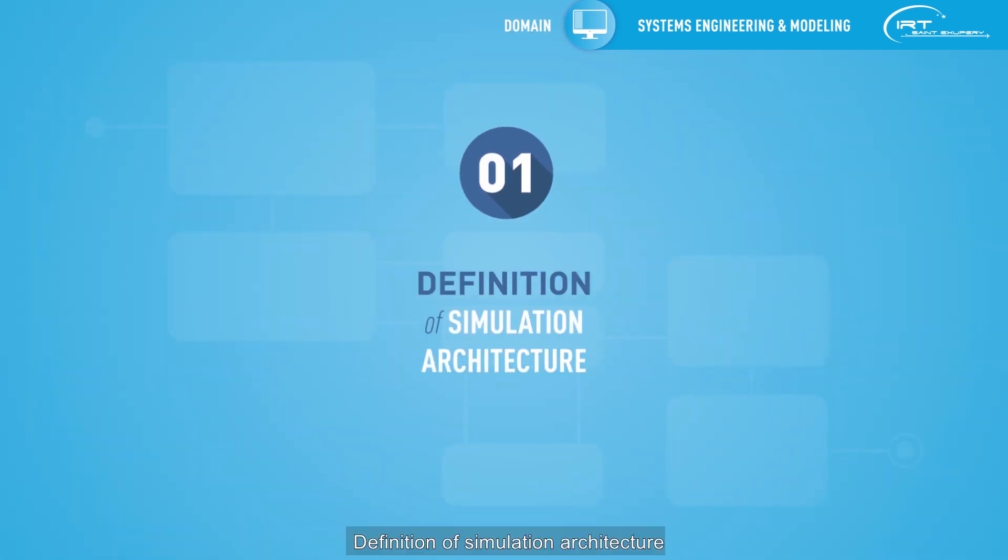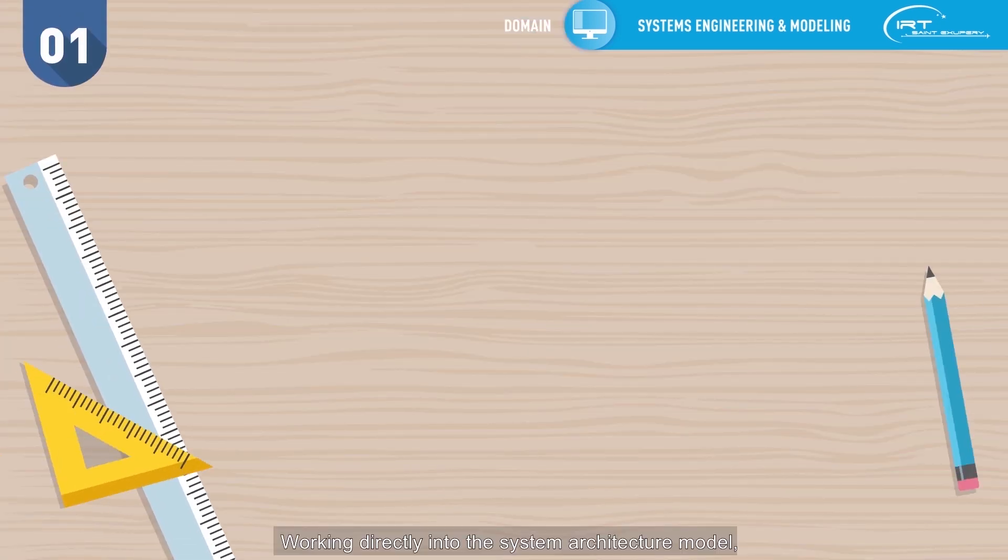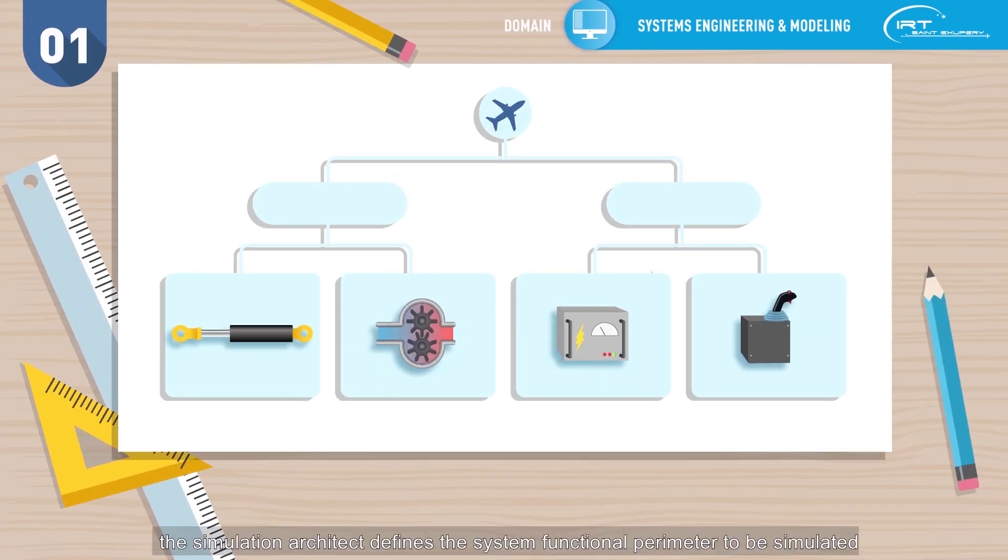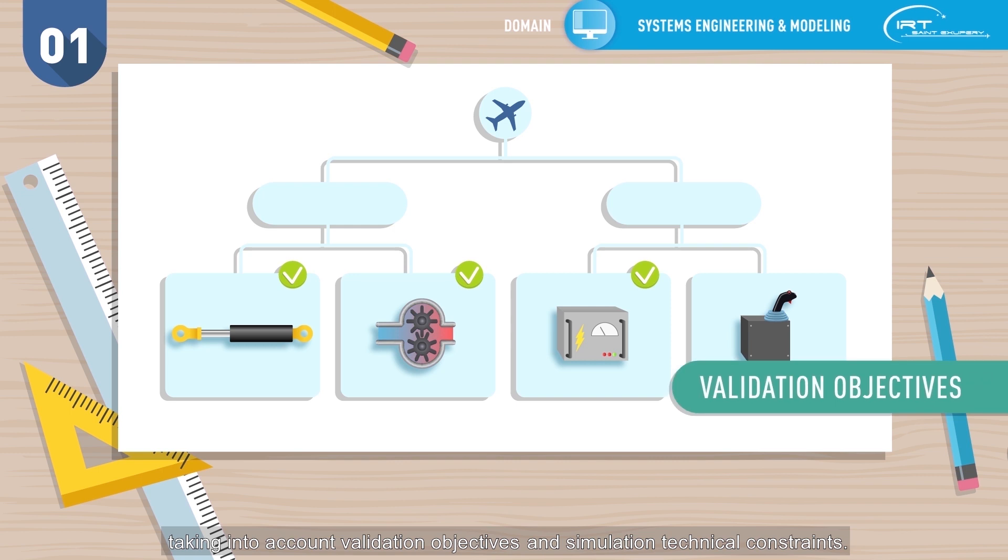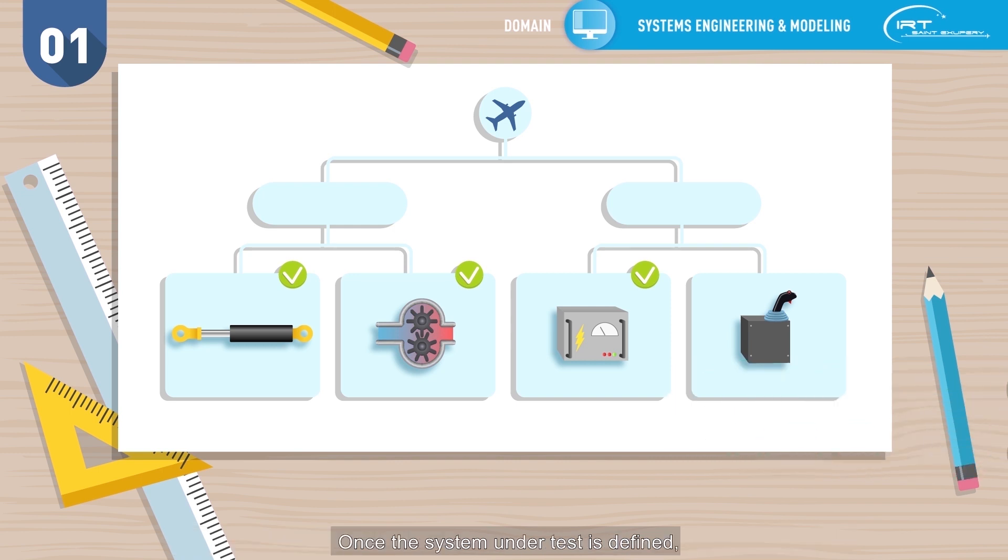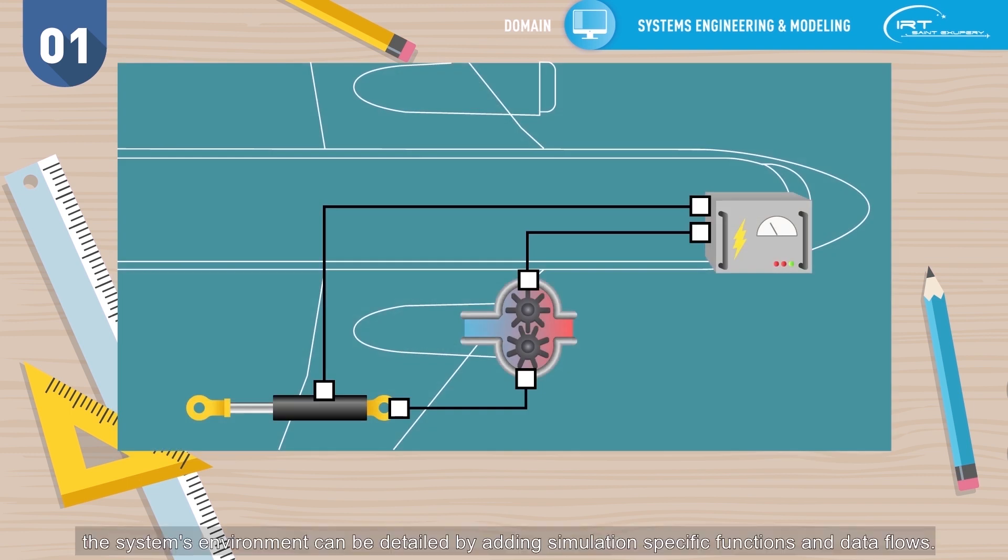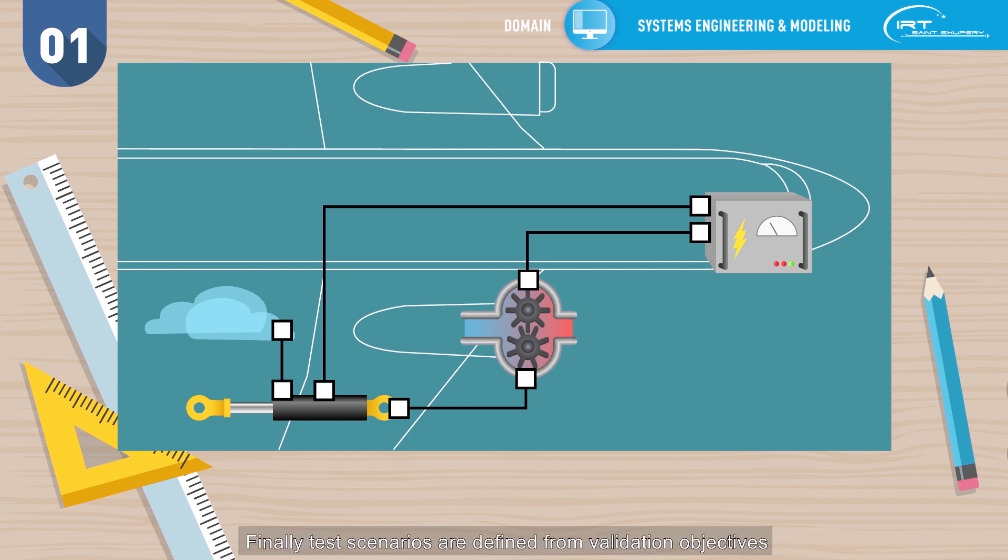Step 1: definition of simulation architecture. Working directly into the system architecture model, the simulation architect defines the system functional perimeter to be simulated, taking into account validation objectives and simulation technical constraints. Once the system under test is defined, the system's environment can be detailed by adding simulation-specific functions and data flows. Finally, test scenarios are defined from validation objectives, including initialization data and external solicitations.